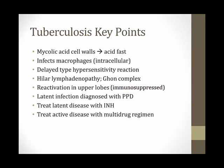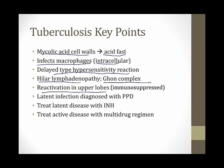Key points from this module: mycolic acids make up the TB cell wall, making it acid-fast. TB infects macrophages and becomes intracellular. The immune response is cell-mediated — a delayed type hypersensitivity, type 4 reaction. Primary exposure leads to hilar lymphadenopathy and the Ghon complex. Reactivation occurs in the upper lobes, especially in immunosuppressed patients. Diagnose latent infection with the PPD test; treat latent disease with INH; treat active disease with a multi-drug regimen.